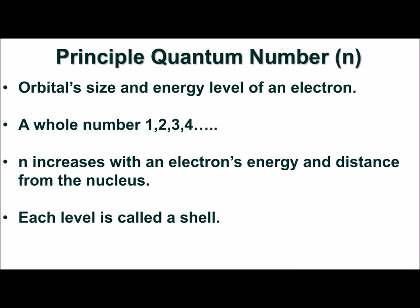The principal quantum number, n, describes an orbital's size and the energy level of the electron in the orbital. It's a whole number starting at 1. Permitted values of n are 1, 2, 3, and so on. An electron's energy and distance from the nucleus increases with increasing value of n and is commonly known as a shell.